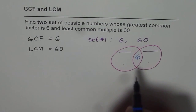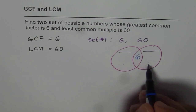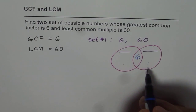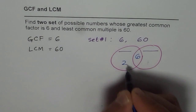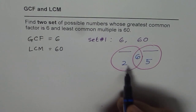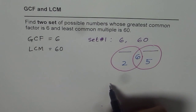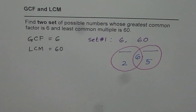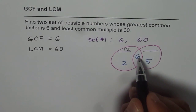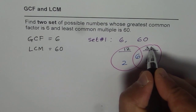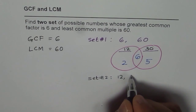The answer we got by placing 10 here — if I write 10 here, I get 6 and 60, since 10 times 6 is 60. But how about the factors of 10? I could write 10 as 2 times 5. Now 2 times 5 is also 10, but that gives us a new set of numbers. Multiply 2 and 6: 2 times 6 is 12. And on this side, 6 times 5 is 30. So the second set of numbers is 12 and 30.